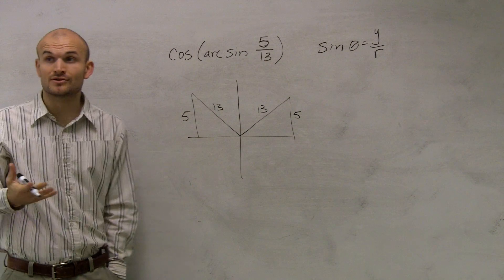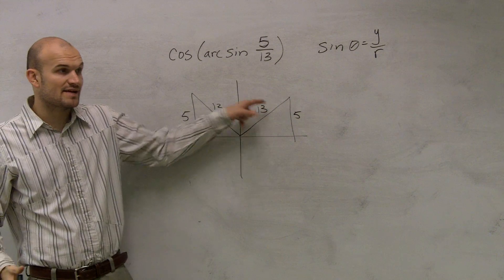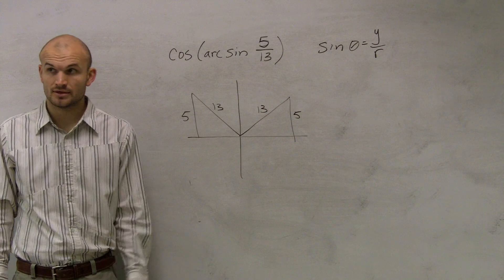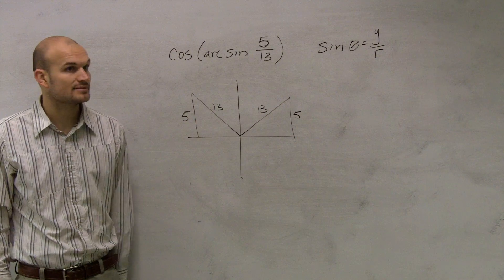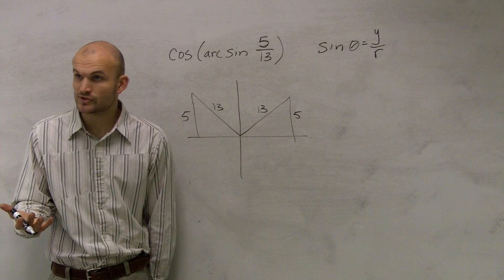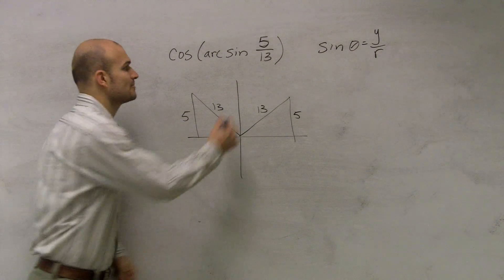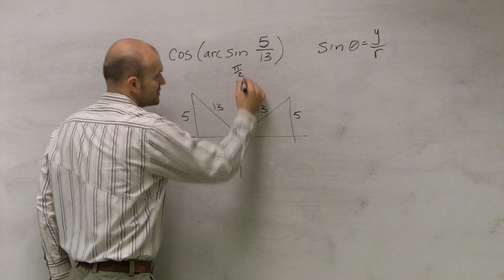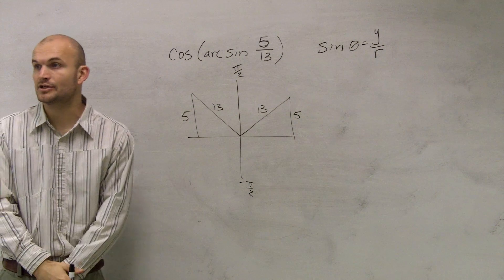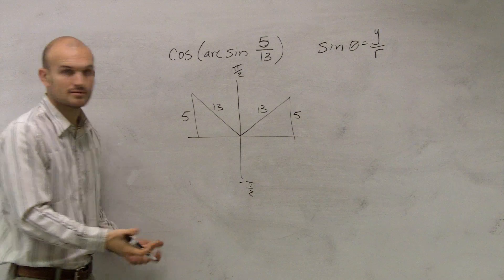I have two possible triangles I could have. Both of these have a hypotenuse of 13, and they both have a y-value of 5. I could say these are both sine of 5 over 13. But remember, we were talking about the restrictions. The restriction of sine is between pi over 2 and negative 5 over 2, or between negative 90 and 90 degrees.